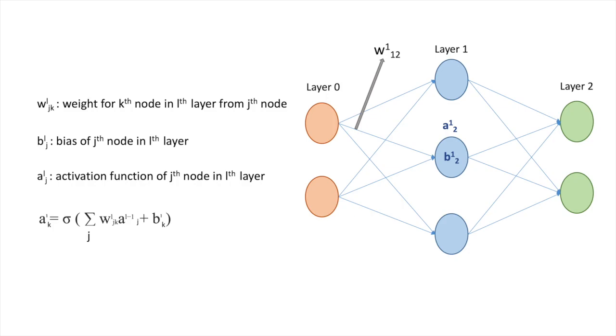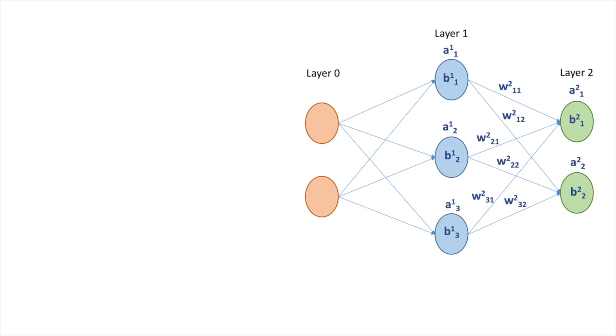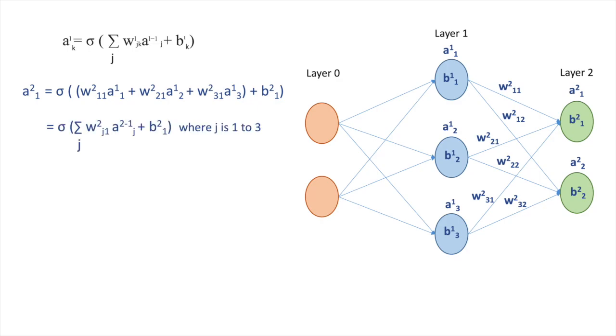Looks complicated. Okay, let me explain. These are weights, biases and activation functions in between layer 1 and 2. How can we write output of first neuron in layer 2? It will be function of w_11^2 times a_1^1 plus w_21^2 times a_2^1 plus w_31^2 times a_3^1 plus b_1^2. We can rewrite as summation of w_j1^2 times a_j^1.